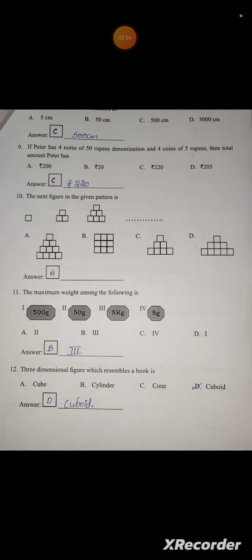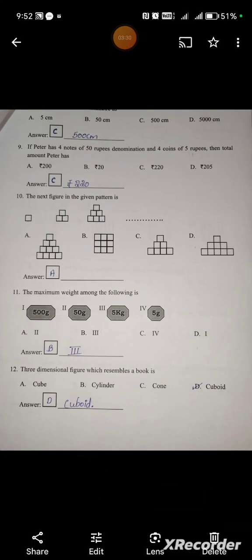Which is the highest measurement? 5 centimeter, 50 centimeter, 500 centimeter, 5000 centimeter. Answer will be C, 500 centimeter.